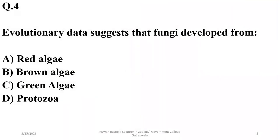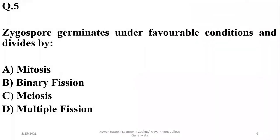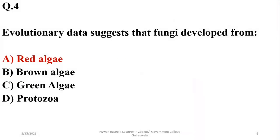The evolutionary data suggests that fungi developed from red algae because red algae as well as fungi don't possess flagellated cells at any stage. That's why they are linked with fungi.